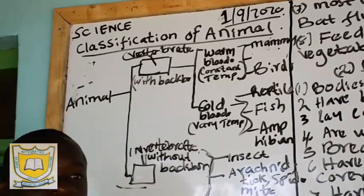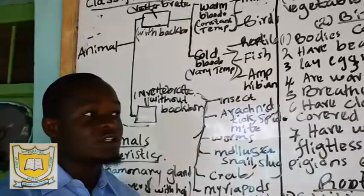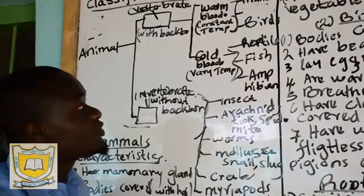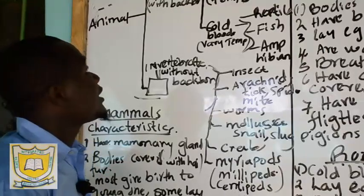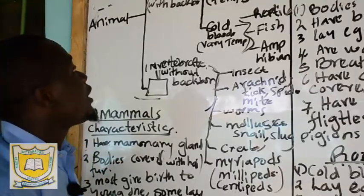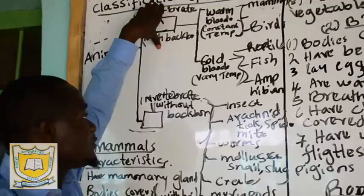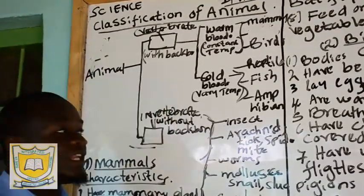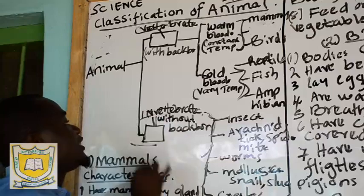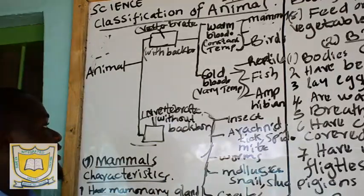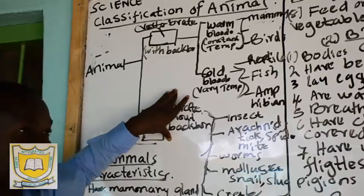When we talk about vertebrates, these are animals that have backbones. When you touch the back of your back, you will find you have a bone there — that is what we call a backbone. Animals with backbones are said to be vertebrates. Those animals that lack backbones are said to be invertebrates. 'In' means lack of, so we have vertebrates and invertebrates.